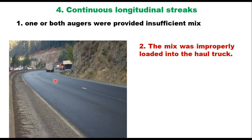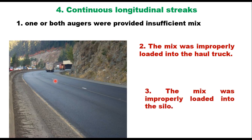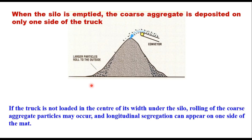The third reason is that the mix was improperly loaded into the silo. When the silo is emptied, the coarse aggregate is deposited only on one side of the truck. This segregated material then passes through the paver and is seen on one side of the mix after lay down. Further, if the truck is not loaded in the center of its width under the silo, rolling of the coarse aggregate particles may occur and longitudinal segregation can appear on one side of the mat.